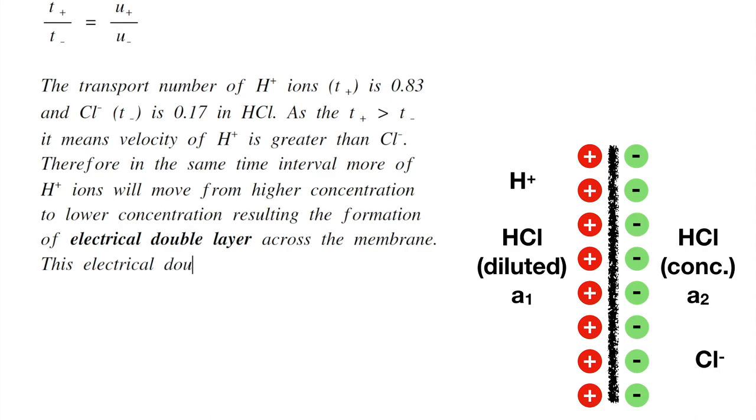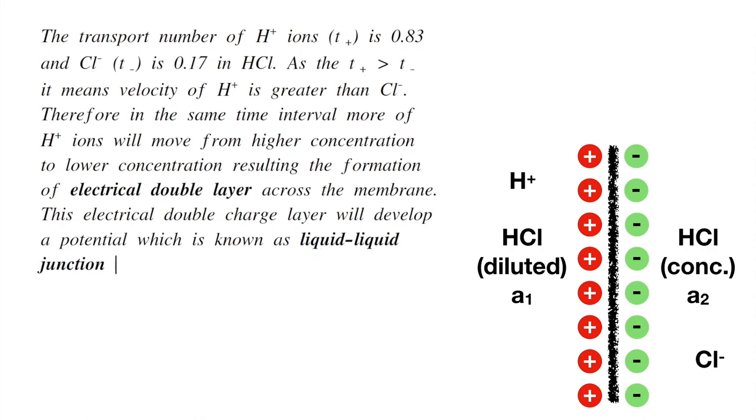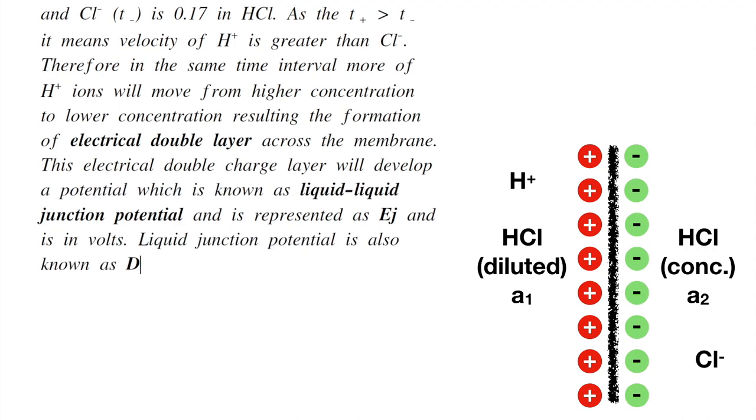This electrical double charge layer will develop a potential which is known as liquid-liquid junction potential and is represented as Ej and is always expressed in volts. Liquid junction potential is also known as diffusion potential.